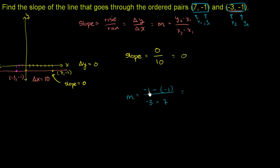So the numerator, negative 1 minus negative 1. That's the same thing as negative 1 plus 1. And our denominator is negative 3 minus 7, which is negative 10. So once again, negative 1 plus 1 is 0 over negative 10. And this is still going to be 0.